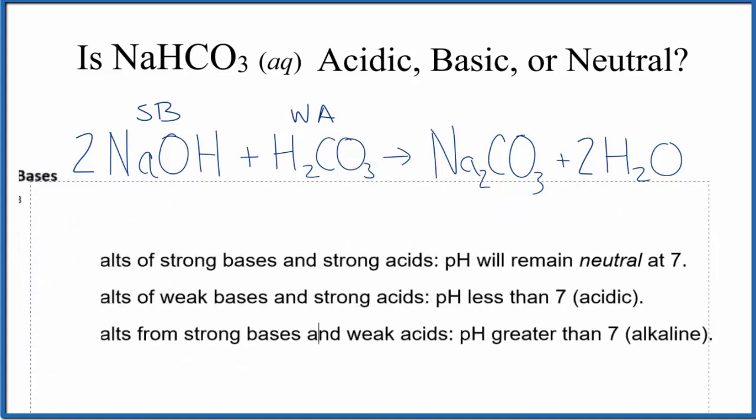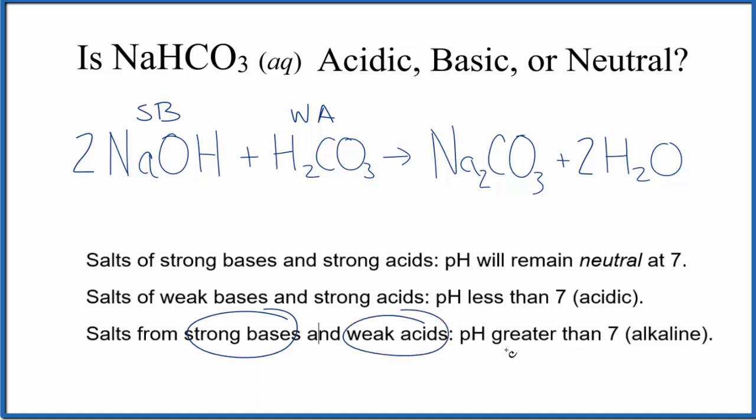Now if we look at our rules, strong base, strong acid, nope. Weak base, nope. Strong base, weak acid. That's what we have up here. pH should be greater than 7. So NaHCO3 should be basic, also called alkaline, when it's dissolved in water. pH would be above 7.